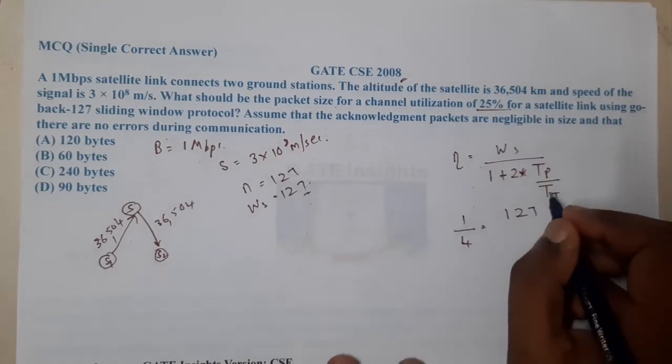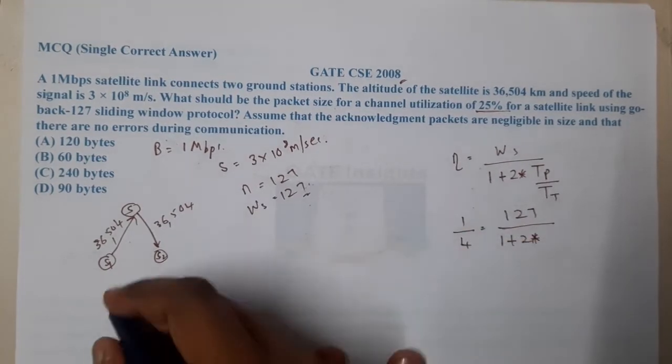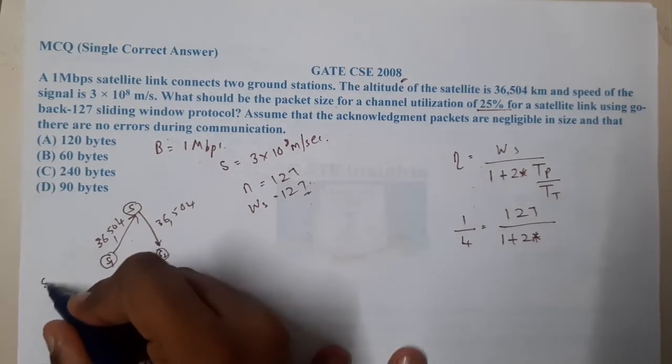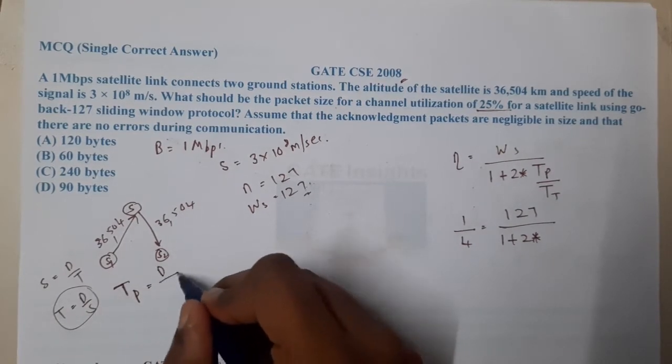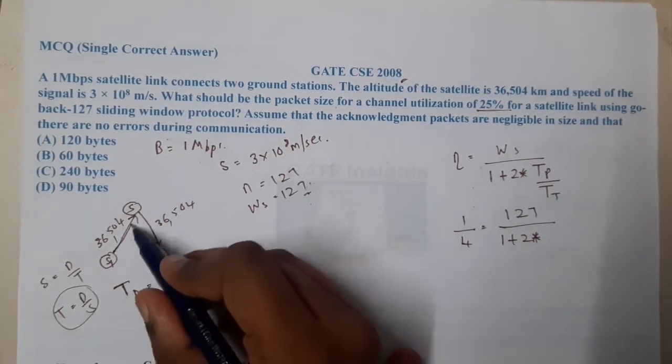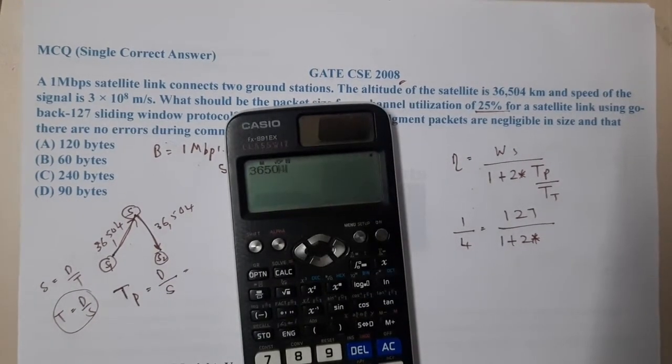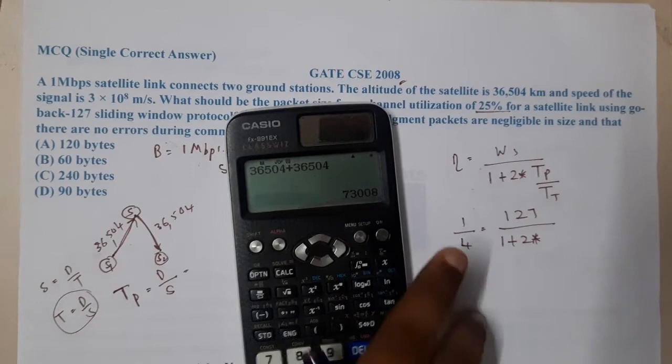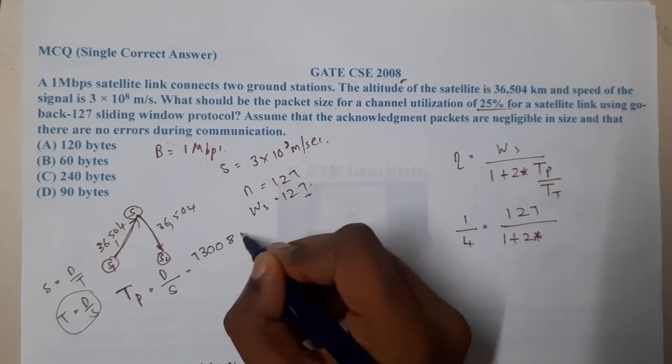What is the value of Tp? Recall that speed equals distance by time, so time equals distance by speed. Tp is distance by speed. The total distance is 36,504 + 36,504 km (both ways), which equals 73,008 km. Converting to meters: 73,008 × 10^3 meters.